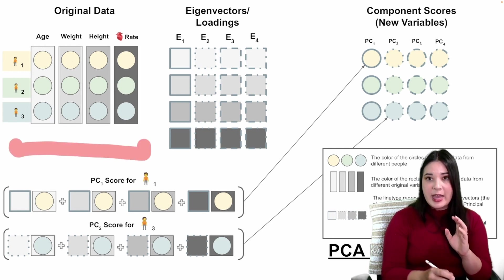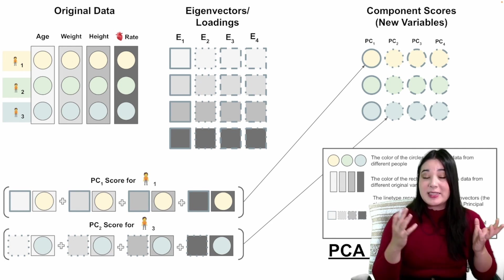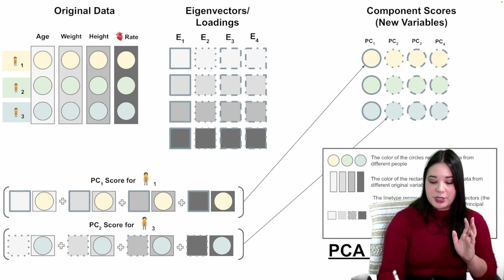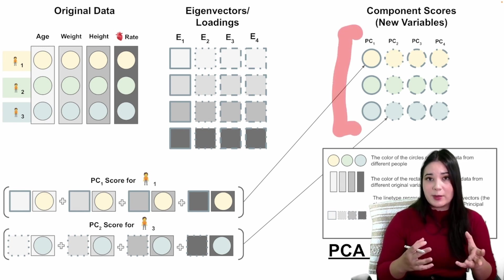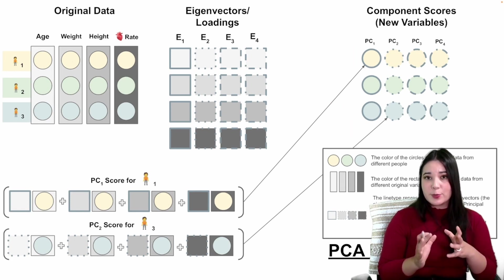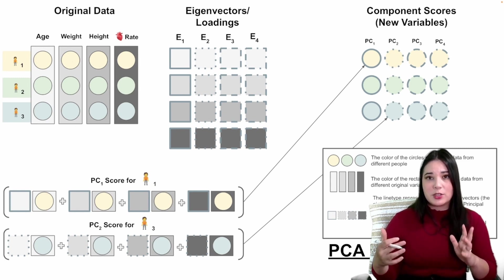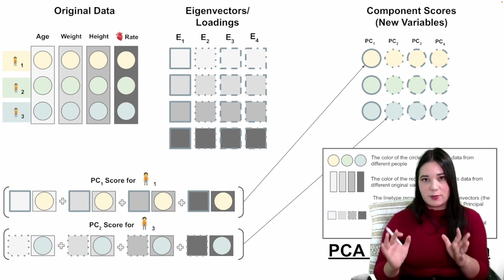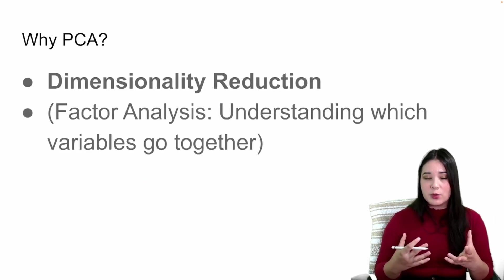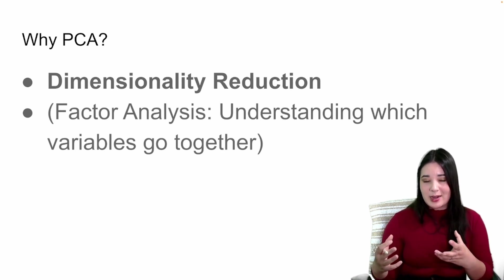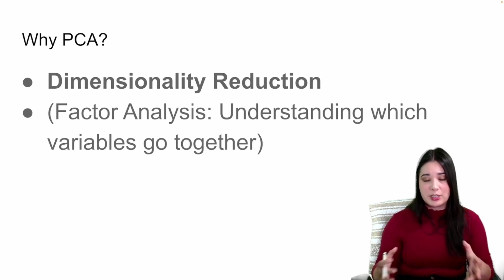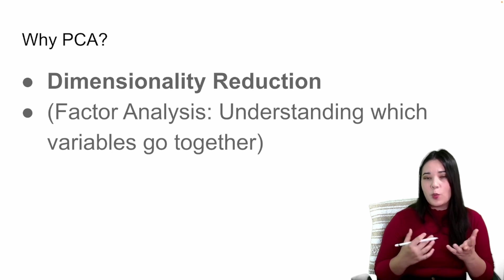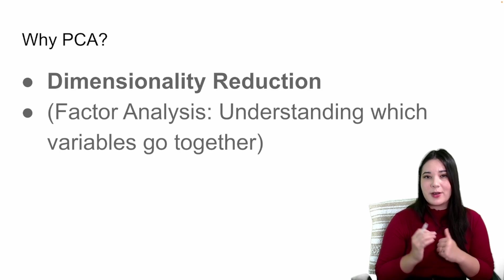PCA is best when you need to make a prediction and want computationally efficient models but don't care about interpretation. To summarize: PCA takes advantage of relationships in the data to create a new, more efficient set of uncorrelated variables. We calculate principal components via the covariance matrix's eigenvalues and eigenvectors. The eigenvectors are weights that tell us how to combine original variables into each new component. If you want something similar to PCA but with more interpretability, look into factor analysis.